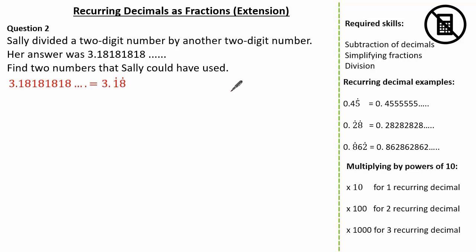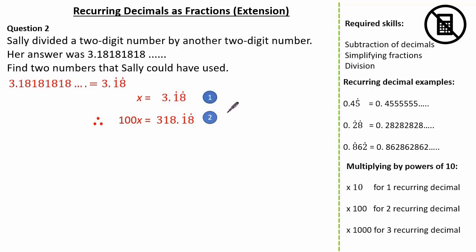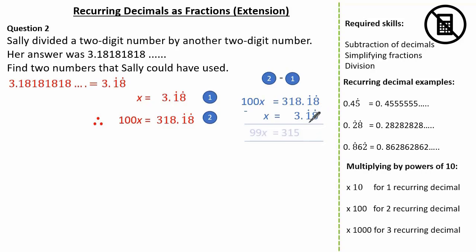This indicates that the 1 and the 8 are recurring. Just like before, let's use algebra. So x is equal to 3.18 recurring. Because we have 2 digits that recur, let's multiply by 100. Therefore, we know 100x is 318.18 recurring. Notice how we've kept to 2 decimal places. Now labelling equation 1 and equation 2, let's subtract. The 0.18 recurring subtract the 0.18 recurring gives nothing. The 8 subtract the 3 gives 5. 1 subtract 0 is 1. 3 subtract 0 is 3. So therefore, 99x is equal to 315.